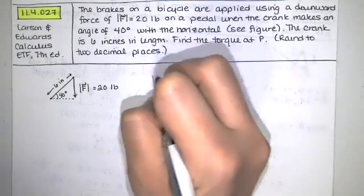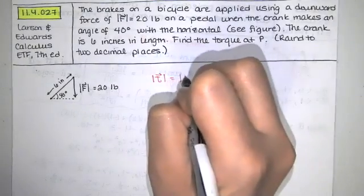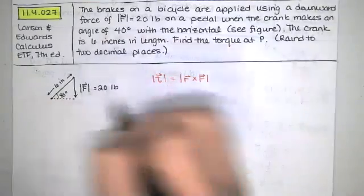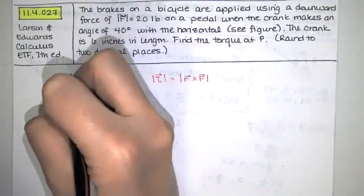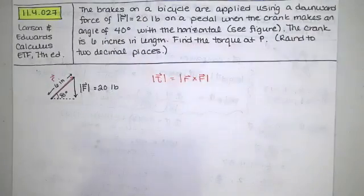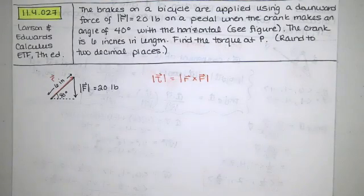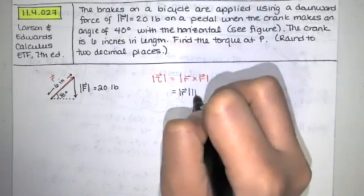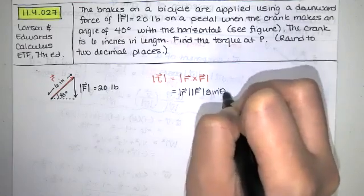The magnitude of the torque is the magnitude of the cross product of r with f, where r is the vector for the moment arm and f is the force being applied. The magnitude of a cross product is given by the magnitude of the first vector times the magnitude of the second vector times the sine of the angle between them.